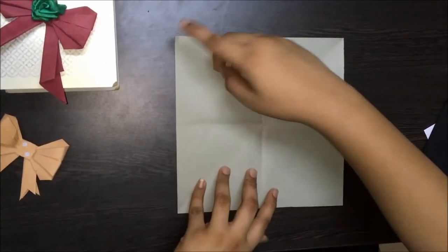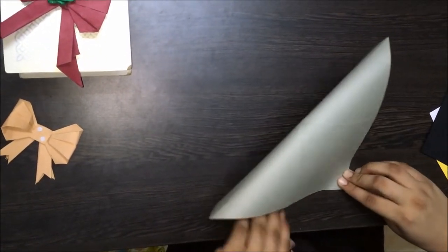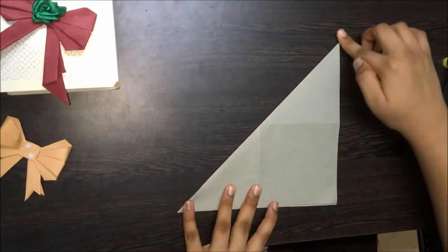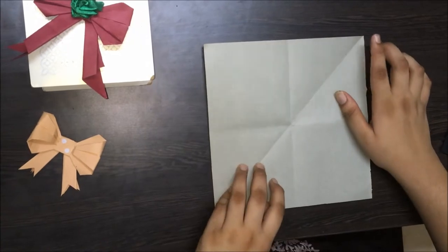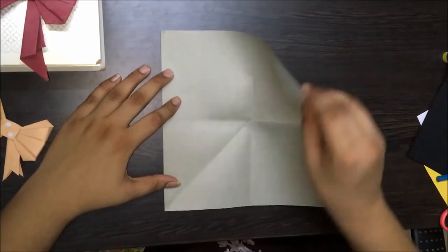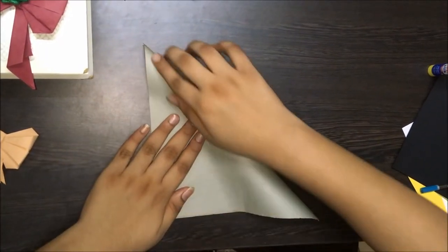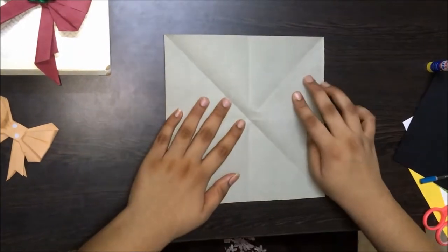Take this corner of the square and put it on this. Let's make a crease. Now take this corner of the square and put it on this. Make a crease. Open it up too.